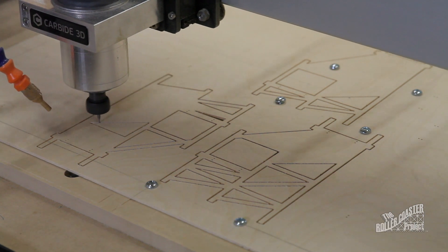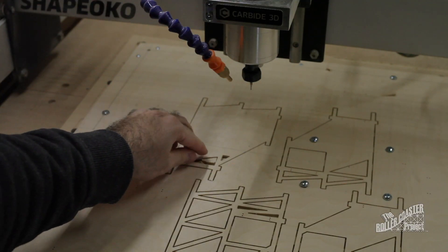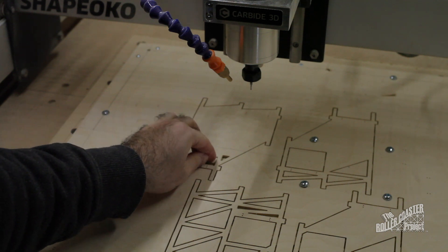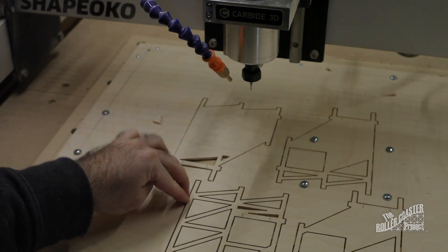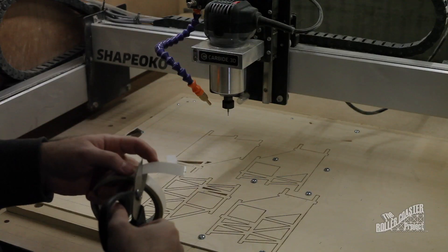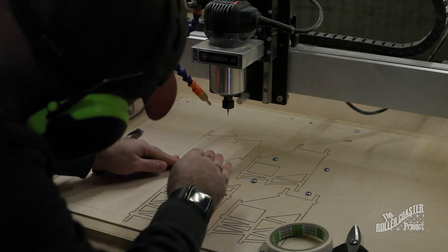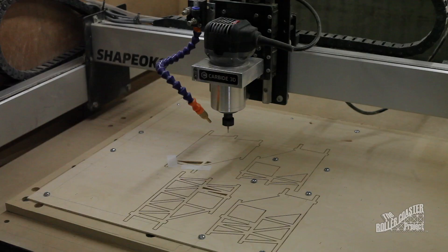Since I'm using holding tabs and no double-sided tape under the plywood, I had a few pieces programmed without any way to hold them. Going forward, I'll fix this error. Some of the loose pieces would become lodged under the plywood, so I had to pause the CNC and remove the pieces before continuing.